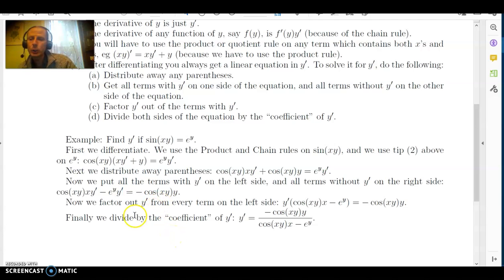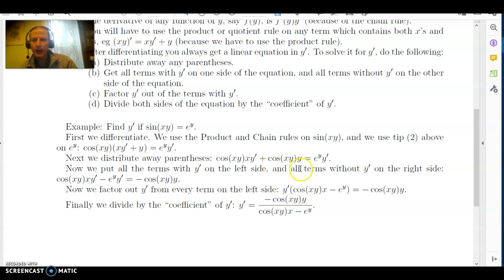Now every term on the left-hand side has a y prime in it, and therefore you can factor y prime out. This gives the equation y prime times the quantity cosine of xy times x minus e to the y, end parenthesis, is equal to minus cosine of xy times y. And now finally, to finish it, we divide by whatever is being multiplied by y prime. At this point, there is only one y prime and you can solve by dividing by what y prime is being multiplied by. So in this case, we divide both sides by cosine of xy times x minus e to the y and get our final answer of y prime equaling minus cosine of xy times y, divided by cosine of xy times x minus e to the y.